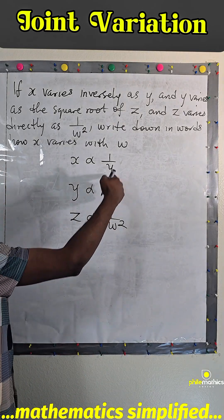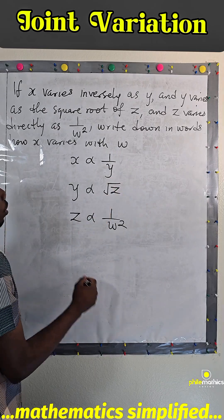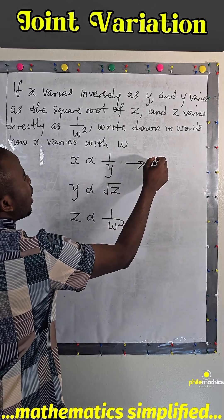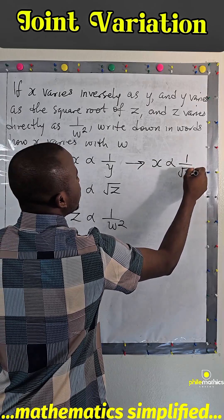However, we can easily substitute root z for y. So from this, I can have x varies as 1 over root z.